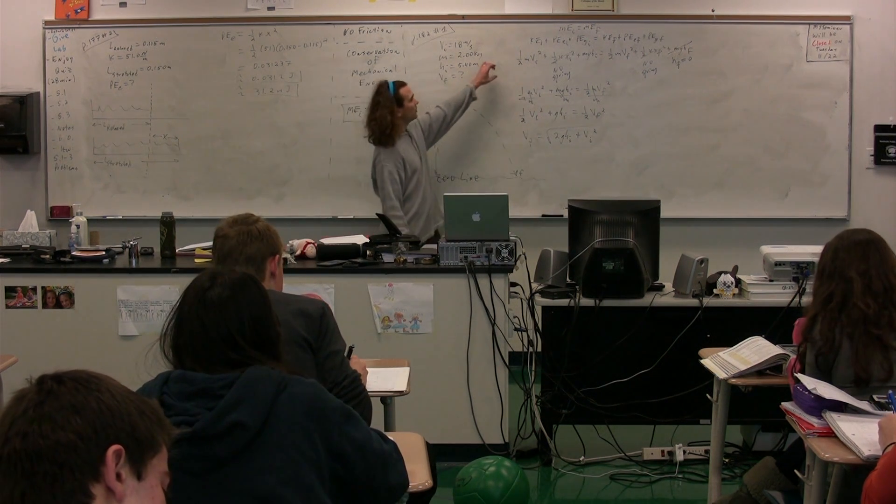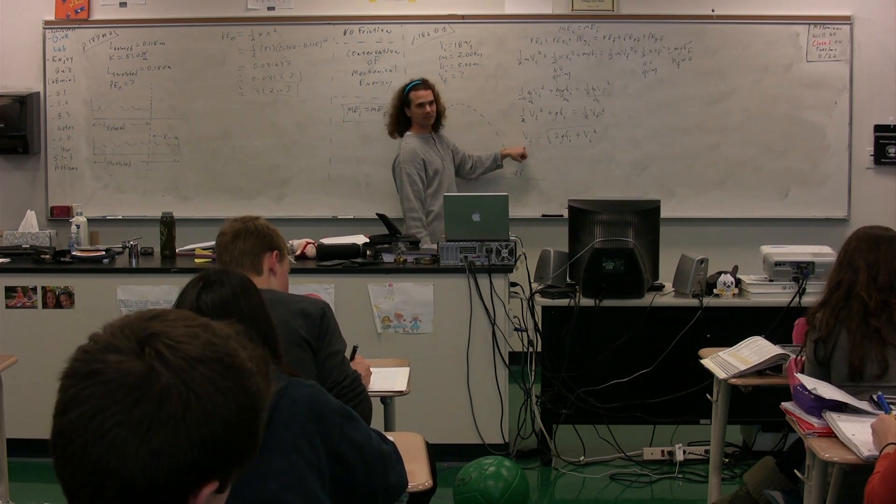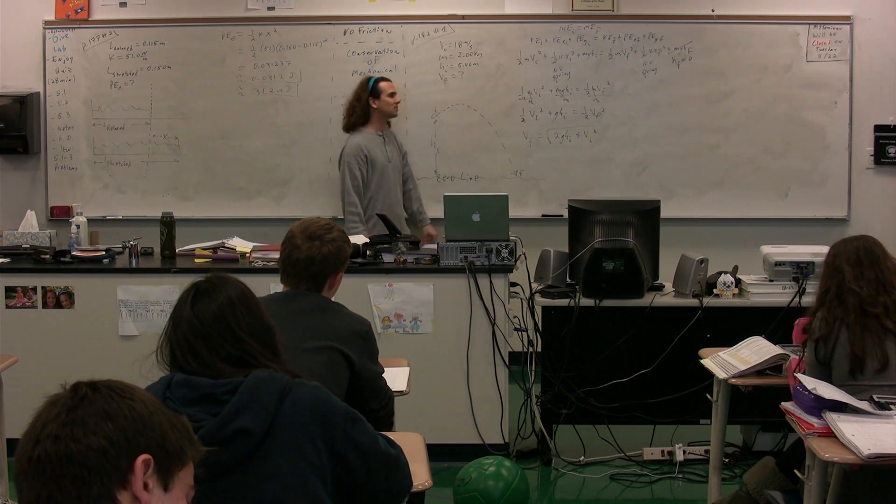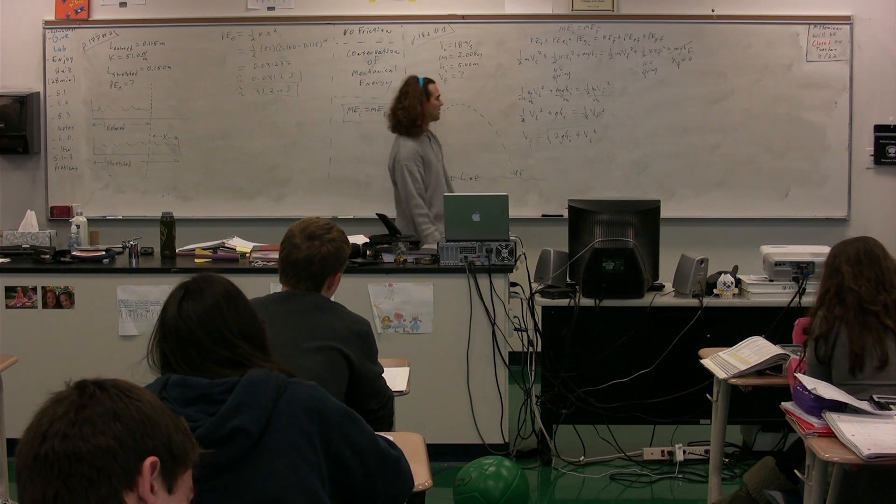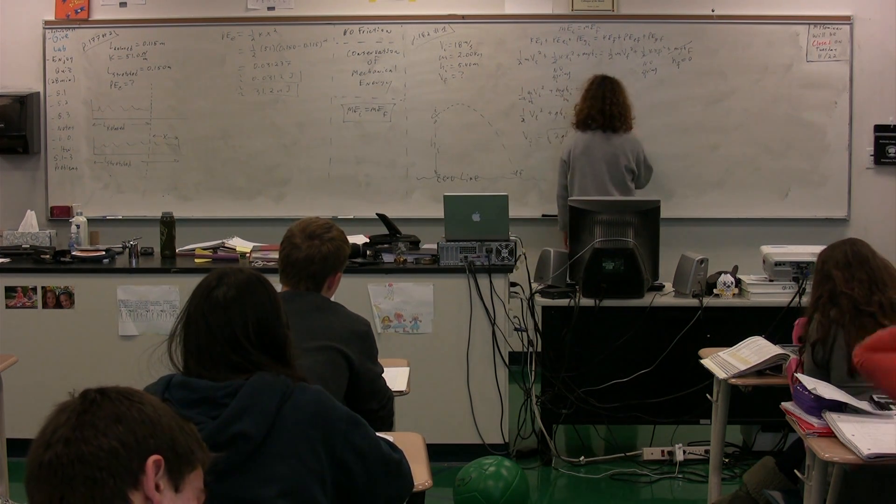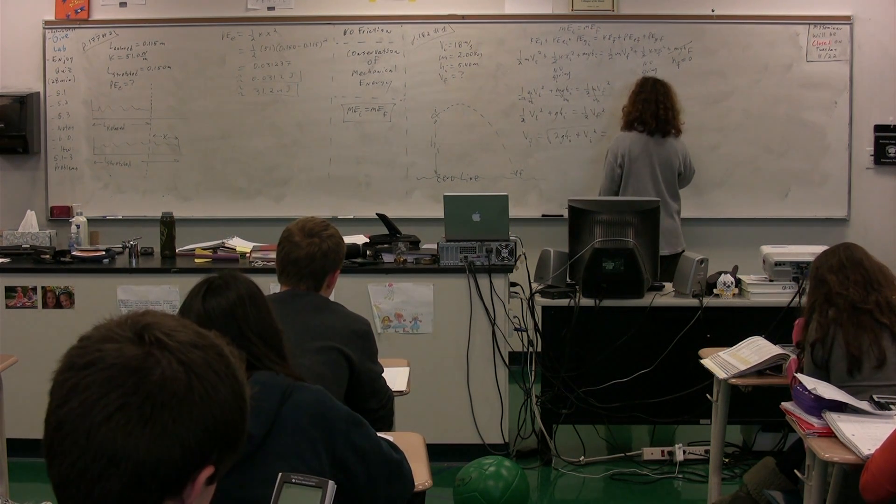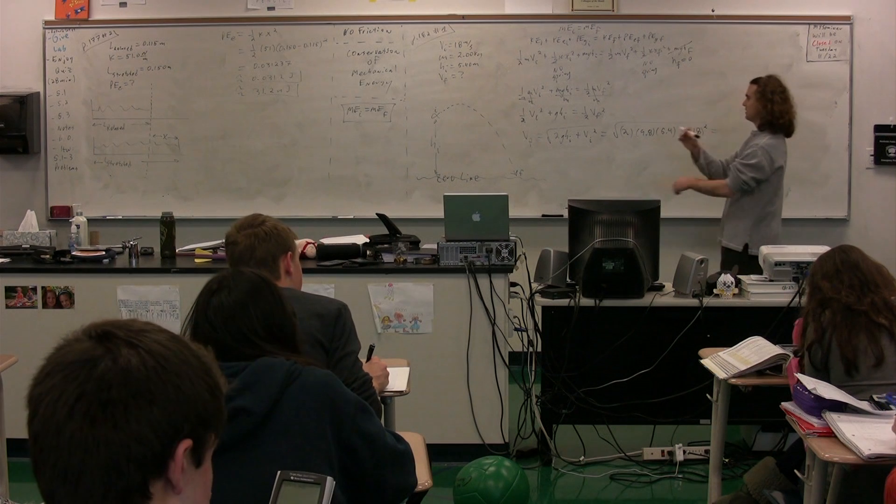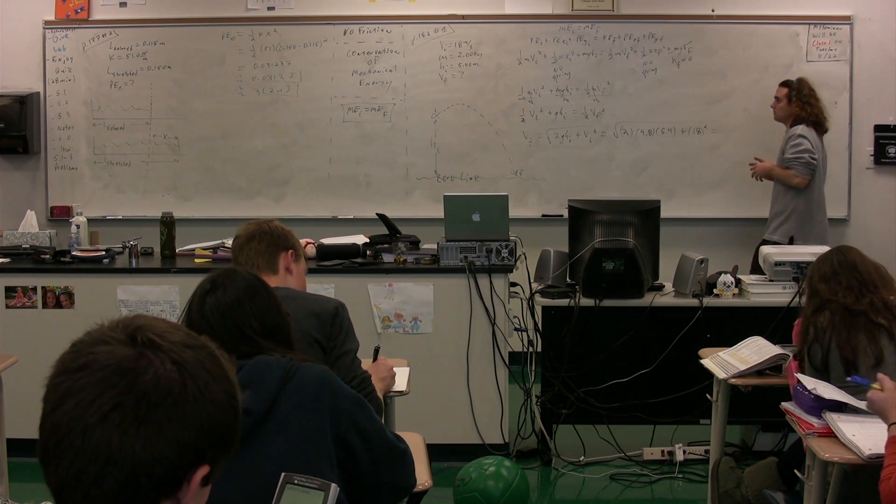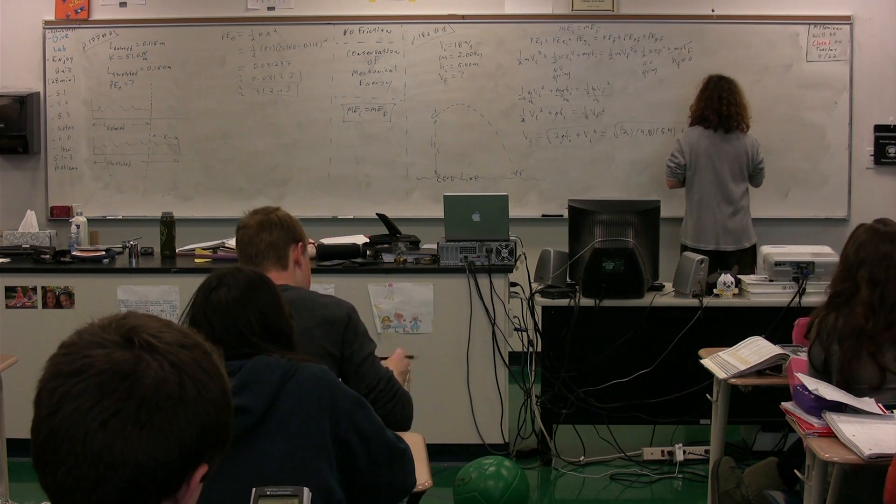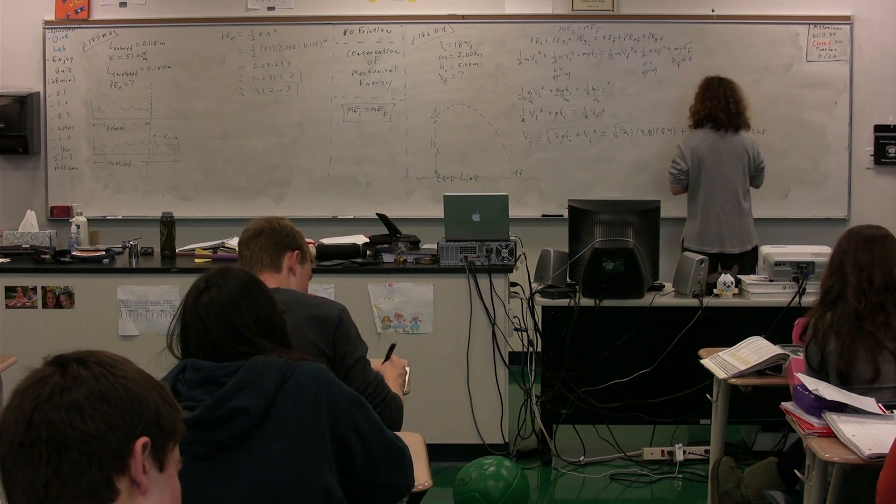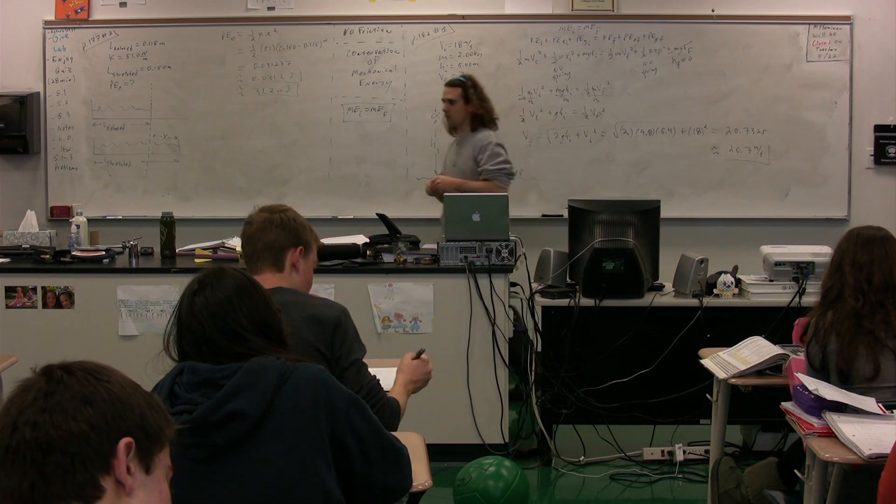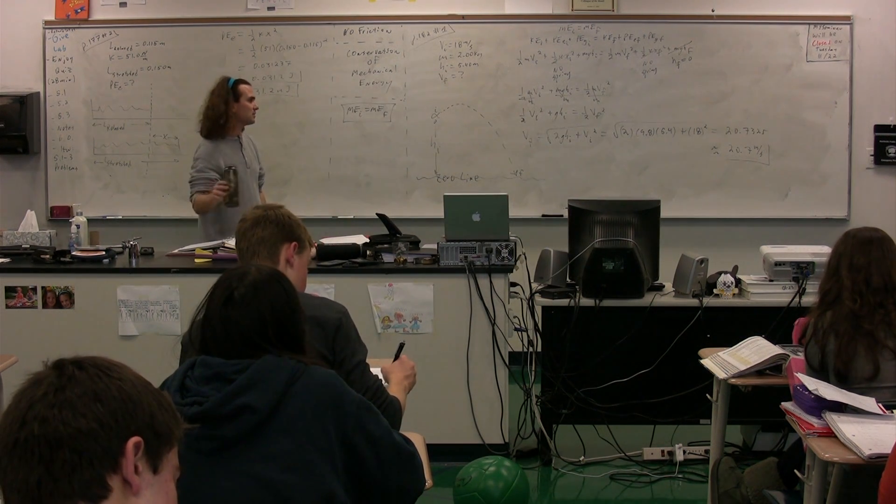So notice we started with this equation up here and we ended with this. Your job when you work with conservation of energy is to figure out what cancels out so that you can end up with a much simpler equation. We have all this information. We have two. The acceleration of gravity is 9.8 here on planet Earth. The height initial was 5.4 plus the velocity initial was 18 which we're going to square. We get the square root of that to get the velocity final: 20.7325 with sig figs will go with 20.7 meters per second. So the velocity final of the fish right before it impacts the water is 20.7 meters per second.